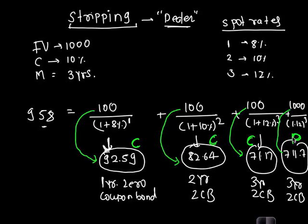The question is: what is the profit to the dealer? Instead of selling at 92.59, they might sell at 93; instead of 82.64, they might sell at 83; and so on for each bond. The dealer charges a small spread on each bond.